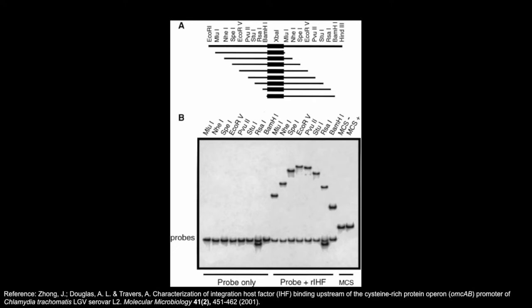Earlier in the paper, Zong, Douglas, and Travers identified the DNA region where IHF bound using a DNA footprinting experiment. They then cloned this DNA region into a specialized plasmid called P-Bend. Cleavage of P-Bend with different restriction enzymes results in uniformly sized fragments with staggered insert locations, as you can see in Part A of this figure.